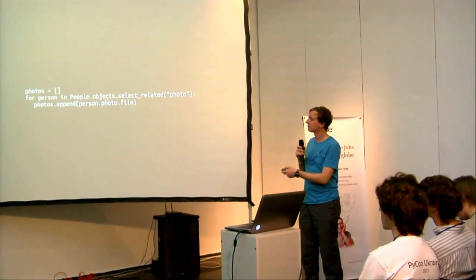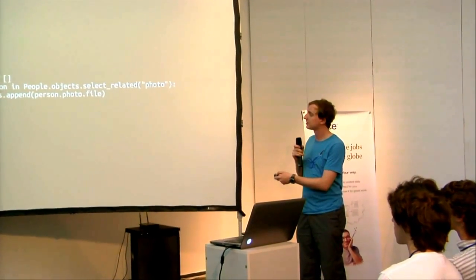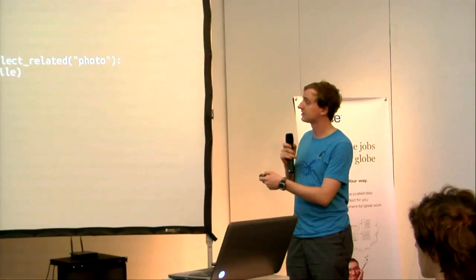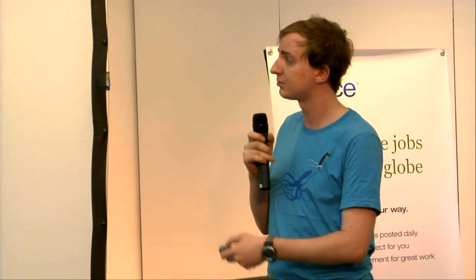In Django, joins are very simple. You say you want all the people, then select_related photo. Django will automatically join the photo onto your people, so accessing photos is free — all the photos come down with that one query. That's already more efficient: one query, no round trip time.